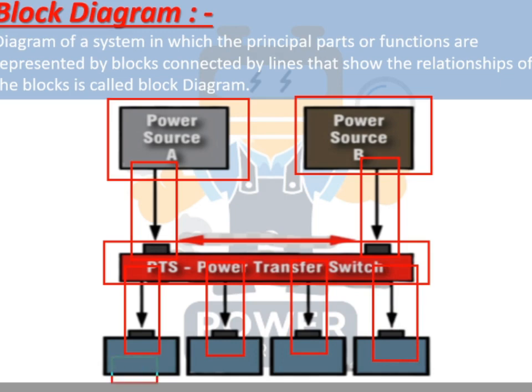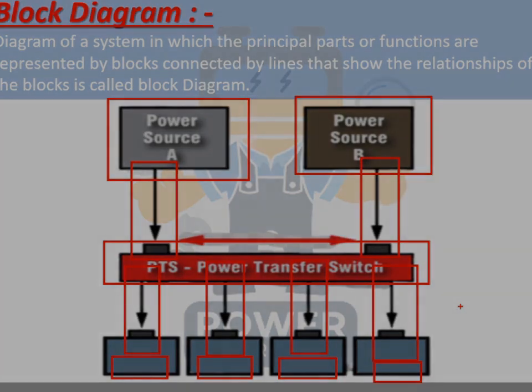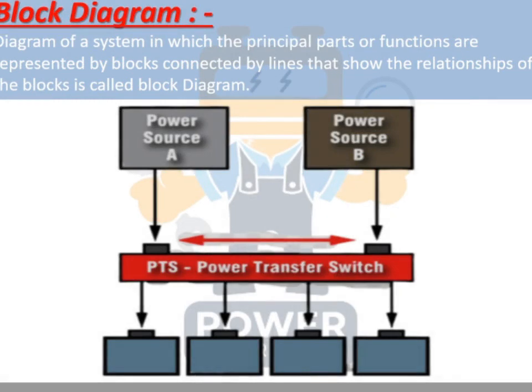You can name these output boxes anything — for example, emergency DB, lobby, or any room name. This kind of drawing is used at the initial stage of a project to share your idea with others. At the planning stage, or when explaining a system to someone, you can use block diagrams. You can draw any blocks, write the name of the system and sources — it is not necessary to use exact electrical symbols.